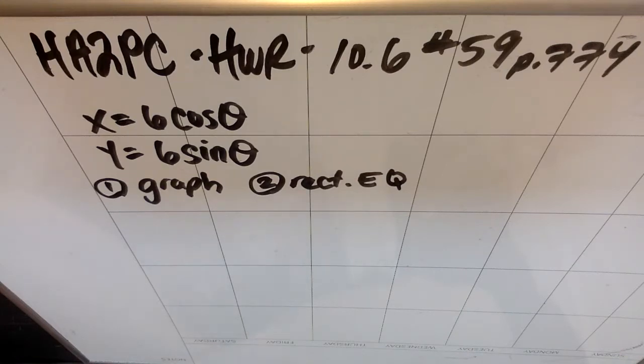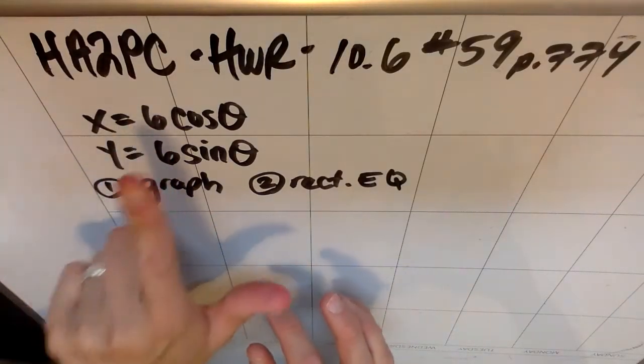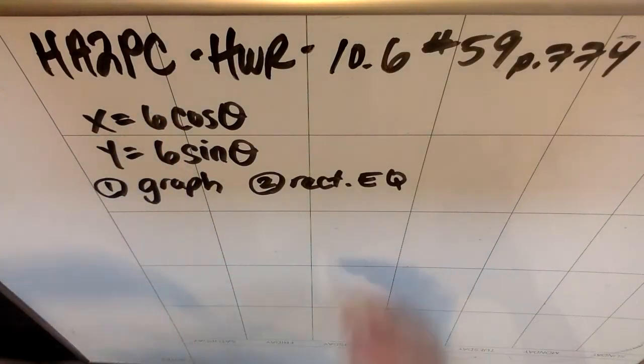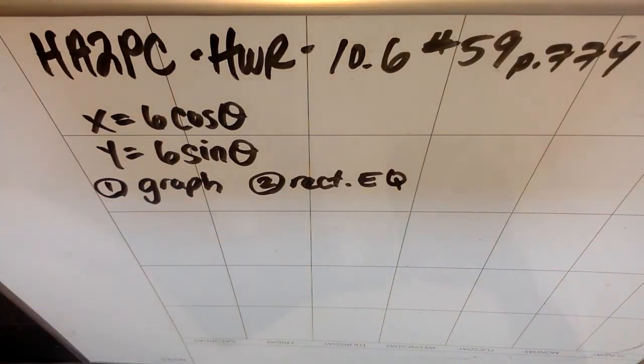The funny thing about this one is that if I took those sixes out, like let's pretend it didn't have a six, let's just say it said x equals cosine theta, y equals sine theta, that's the unit circle, right? Where x is cosine theta and y is sine theta. So basically this is just a unit circle where all the coordinates are six times larger. This is instead of being a unit circle, this is a circle of radius six instead of radius one unit.